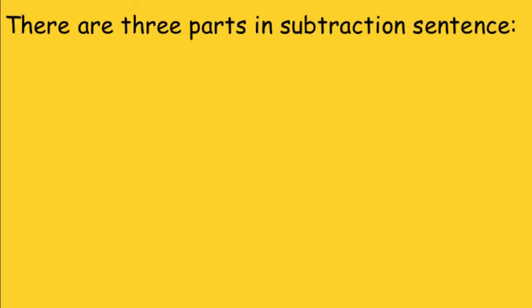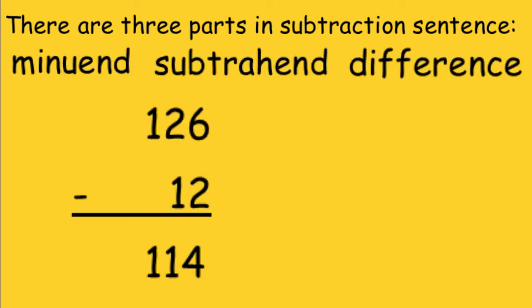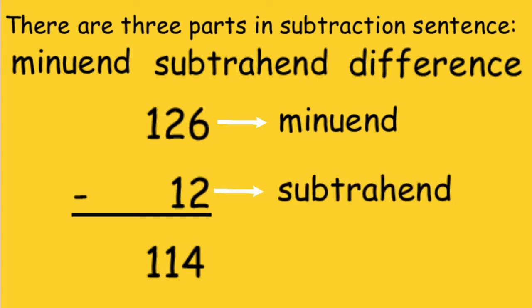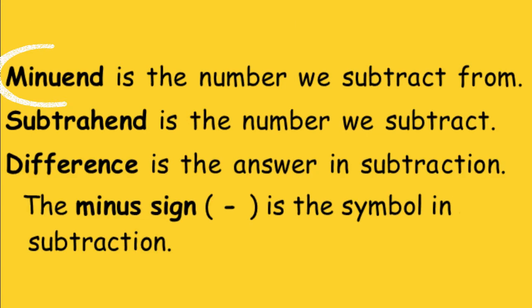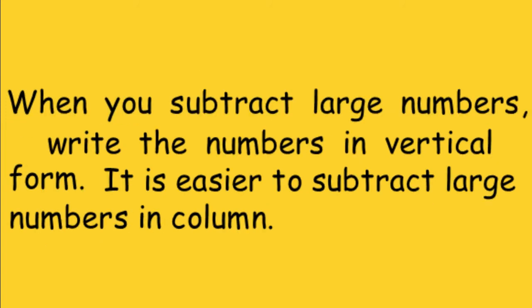There are three parts in a subtraction sentence: the minuend, the subtrahend, and the difference. In 126 minus 12 equals 114: 126 is the minuend, which is the number we subtract from; 12 is the subtrahend, which is the number we subtract; and 114 is the difference, which is the answer in subtraction. The minus sign is the symbol used in subtraction.